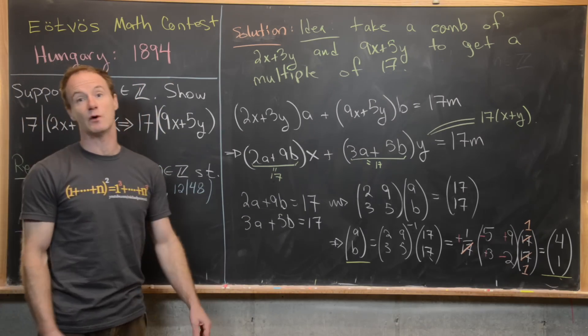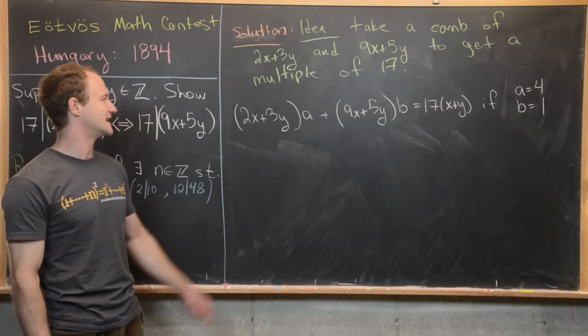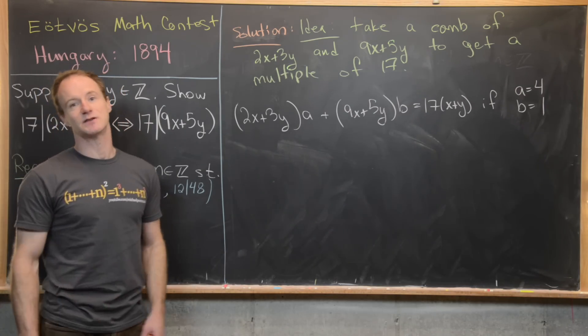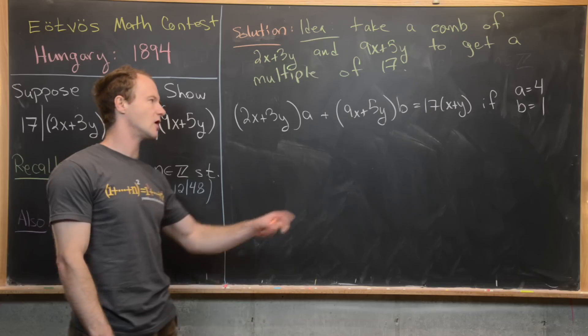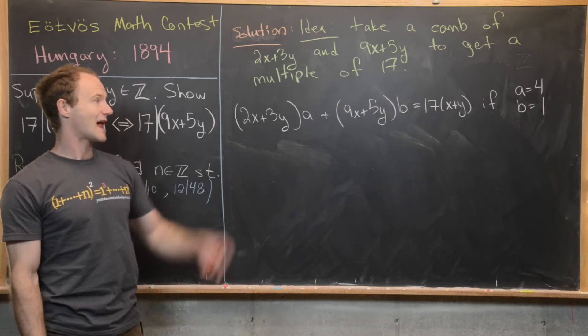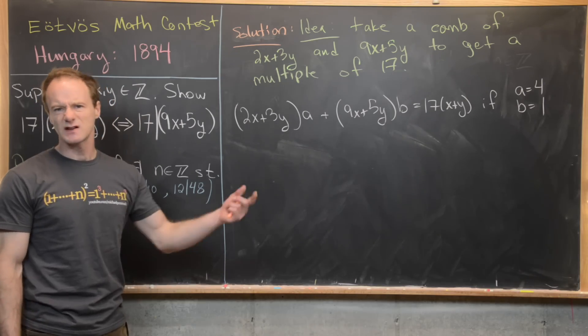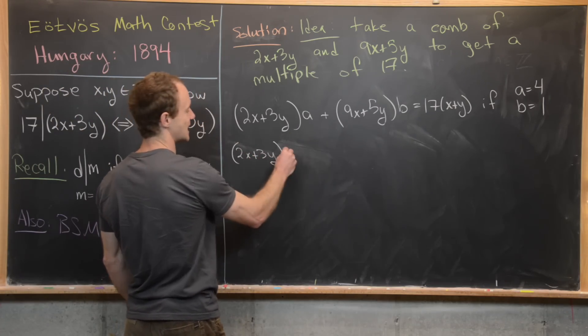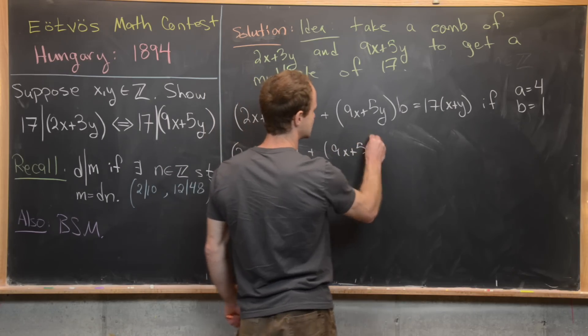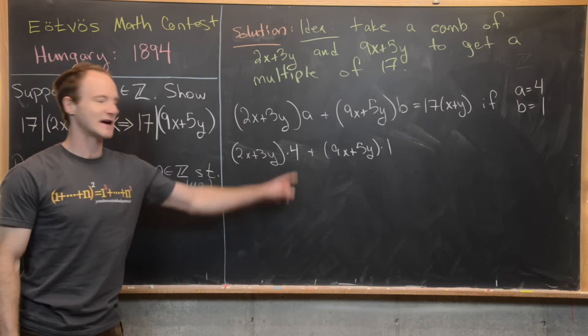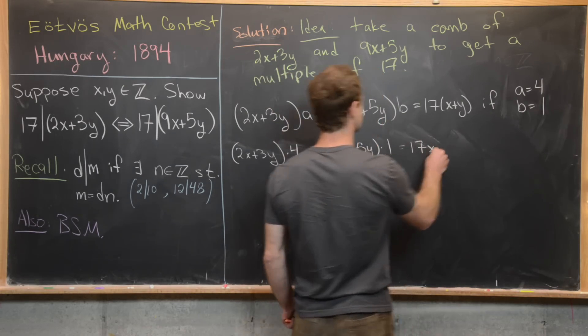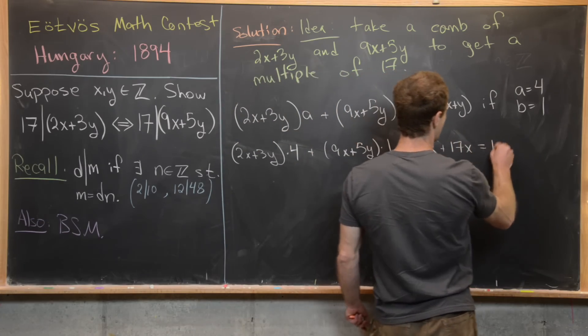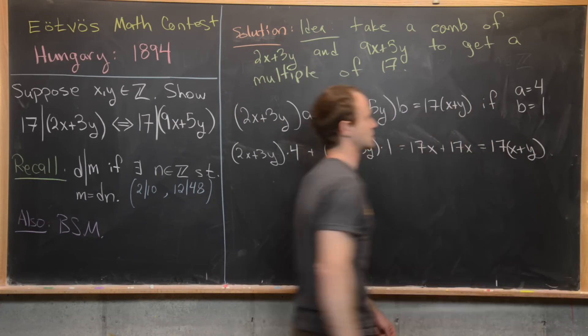So maybe I'll go ahead and erase this and see what we've got. So on the last board, we kind of took a shot in the dark and we saw that we could take a combination of 2x plus 3y, 9x plus 5y, and make that equal to the nicest multiple of 17 possible. And the nicest multiple of 17, which we argued was actually 17x plus 17y. And that occurred when a was equal to four and b was equal to one. So let's maybe just go ahead and check that that works. So here we have 2x plus 3y times 4 plus 9x plus 5y times 1. So that's going to give us 8x plus 9x which is 17x. And then 3y times 4 which is 12y plus 5y. So that's 17y. So in other words, that gives us 17 times the quantity x plus y. So now we're essentially done.